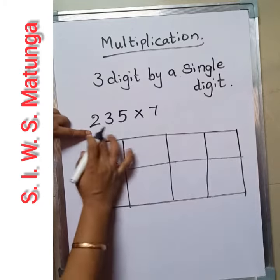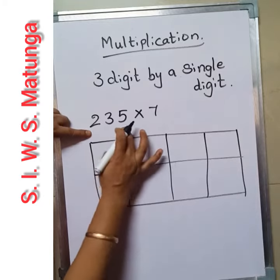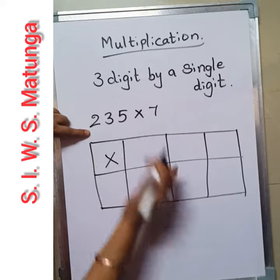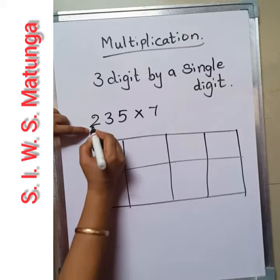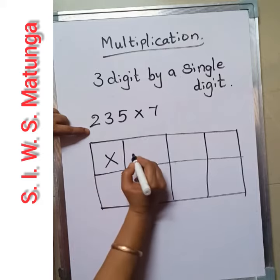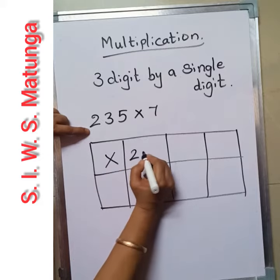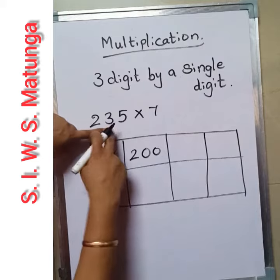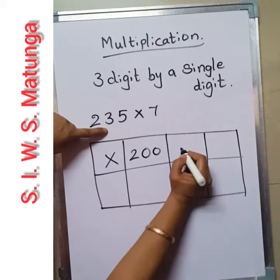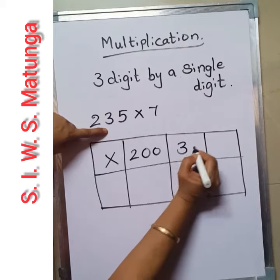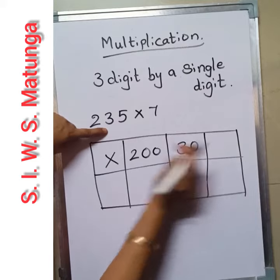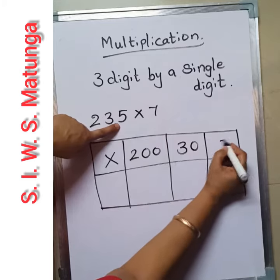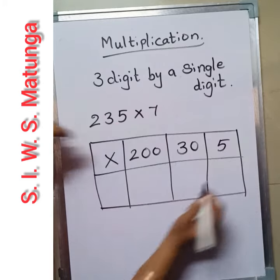Now here 235 — 3 digits. We have 200, so 2 in the hundreds place with 2 zeros. 3 is in the tens place, so 3 and 1 zero. Single unit: 5.